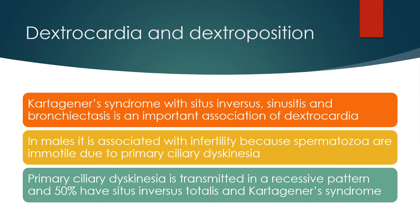Kartagener syndrome, with situs inversus, sinusitis and bronchiectasis, is an important association of dextrocardia. In males, it is associated with infertility because spermatozoa are immotile due to primary ciliary dyskinesia. Primary ciliary dyskinesia is transmitted in a recessive pattern, and 50% have situs inversus totalis and Kartagener syndrome.